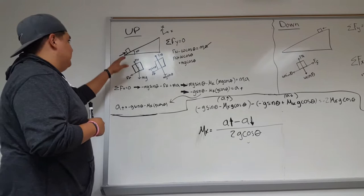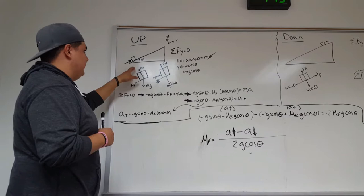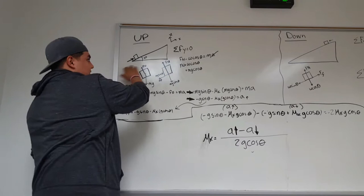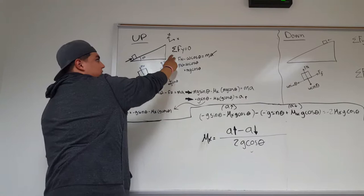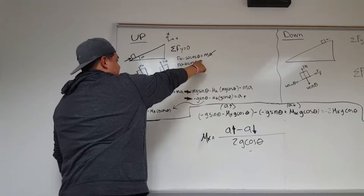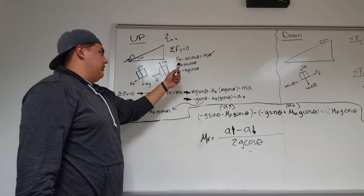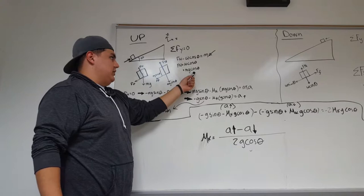So we started off by doing our free body diagram of our object. So we have Fn, the normal force off the track. We have Mg, and our friction force going down in the opposite direction of the car. So then we solved for, we broke it up into components and we solved for Mg cosine theta and Mg sine theta. We solved for our sum forces at y, which is Fn minus omega cosine theta equals Ma. Acceleration is zero because it cannot move in the y direction, so we have Fn equals omega cosine theta, which equals Mg cosine theta.